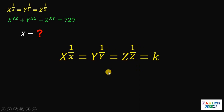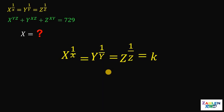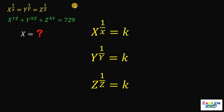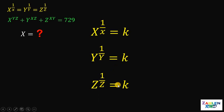Now if we do that, take note that we form three equations: x raised to 1 over x equals k, y raised to 1 over y equals k, and z raised to 1 over z equals k.